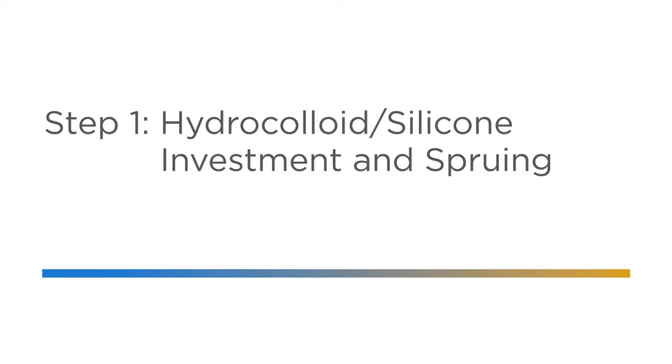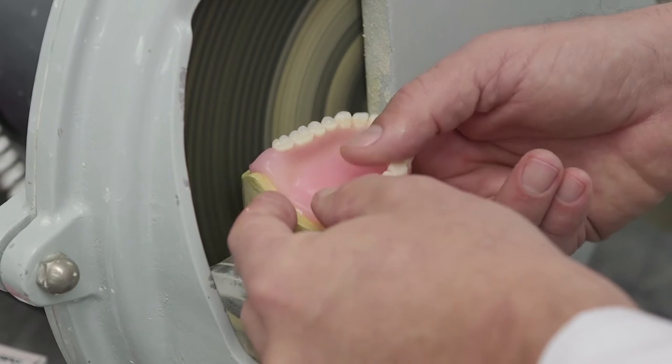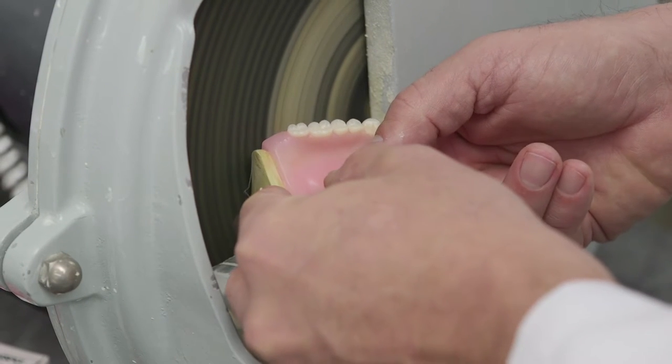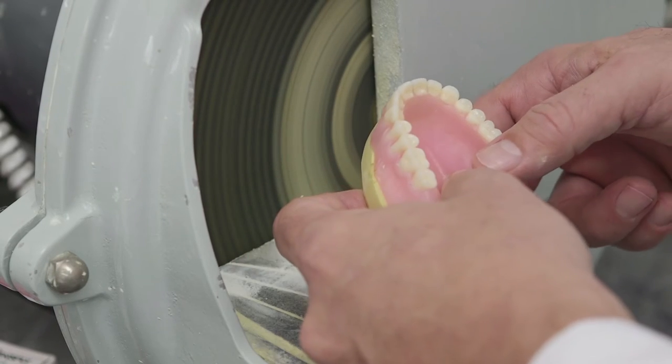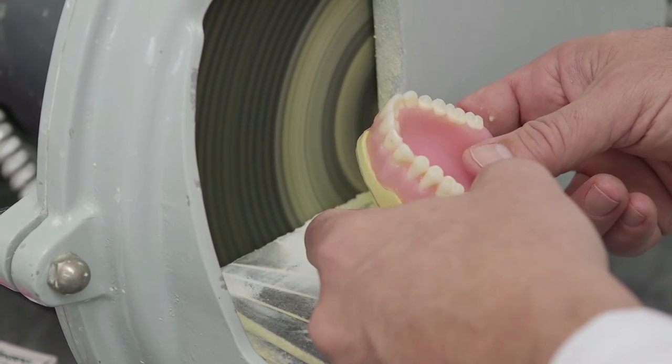Step one is the preparation of the hydrocolloid silicone investment and sprueing. First, incorporate a slight taper into the base of the cast to facilitate removal from the mold material. Incorporate the taper so that the base is the widest.